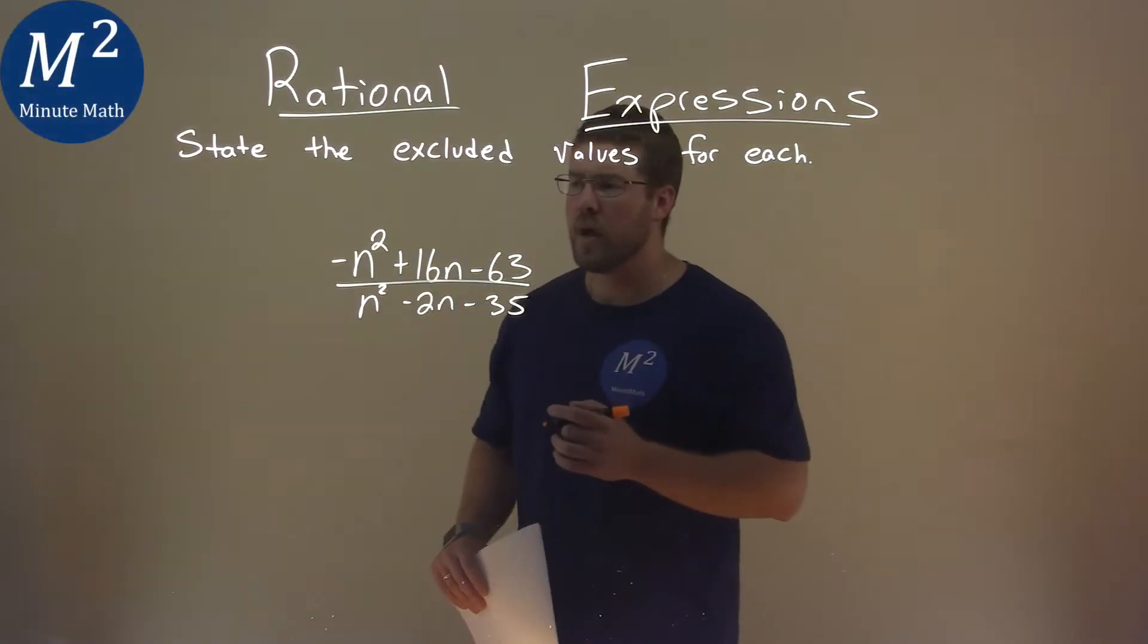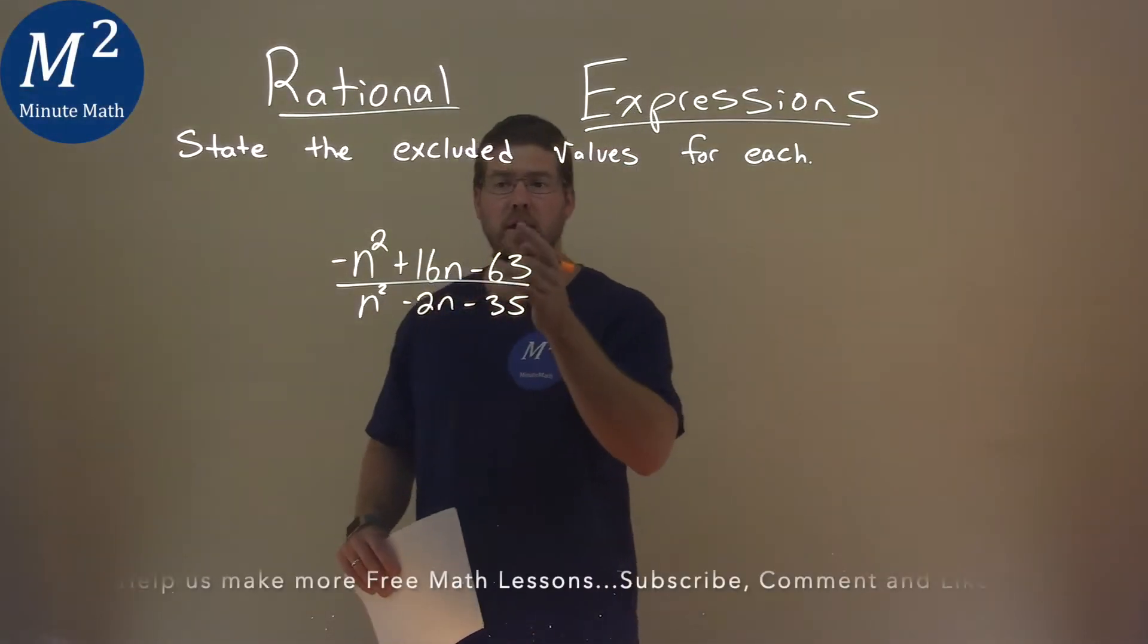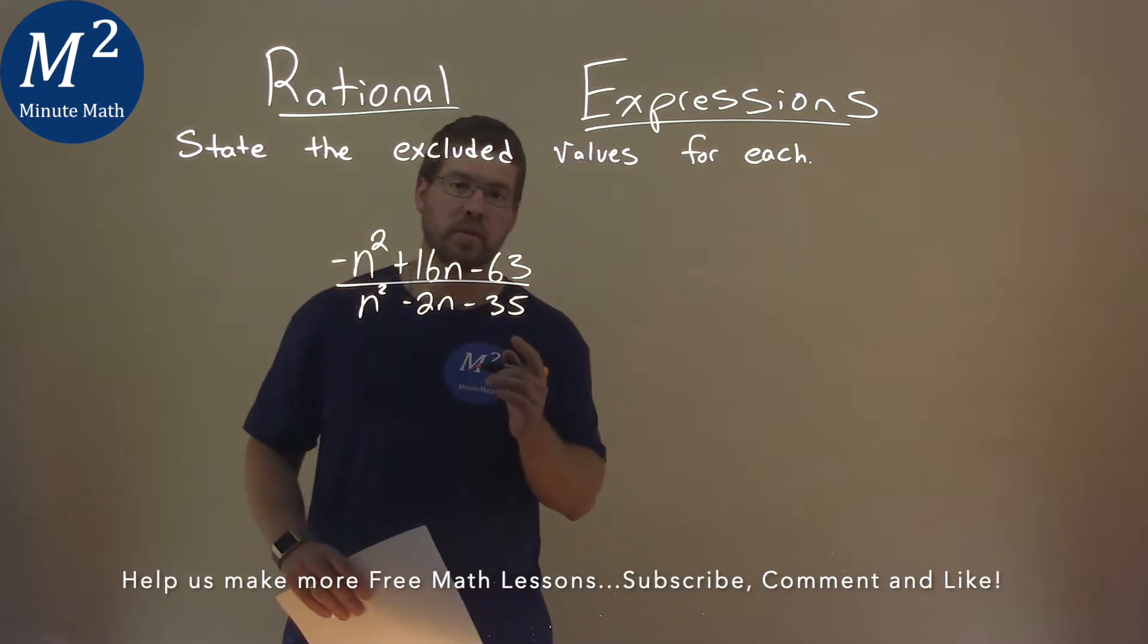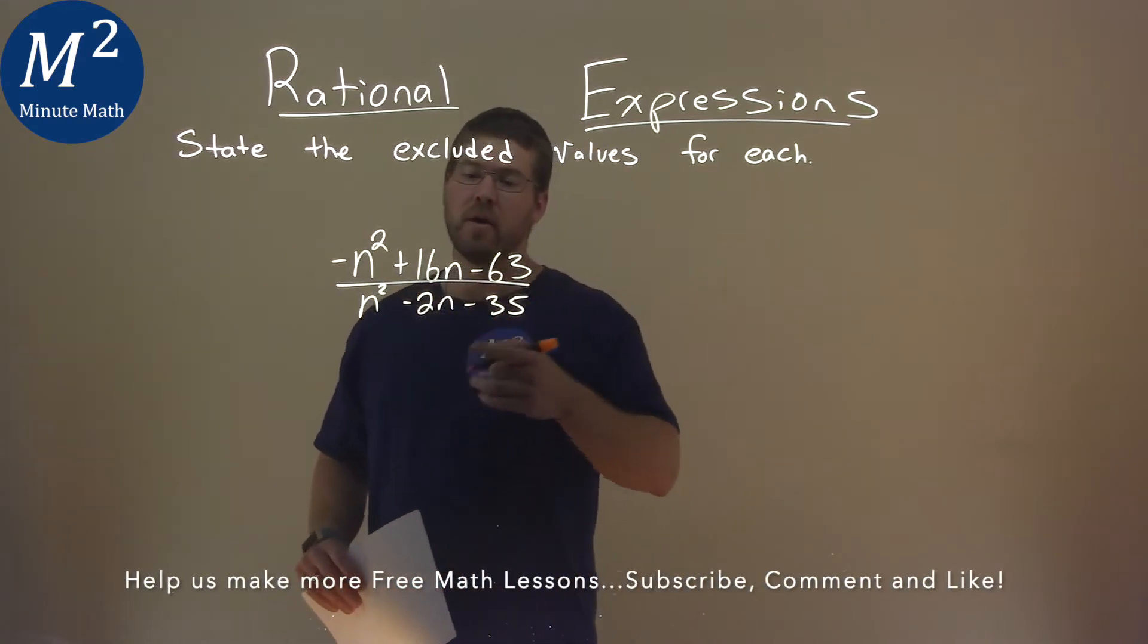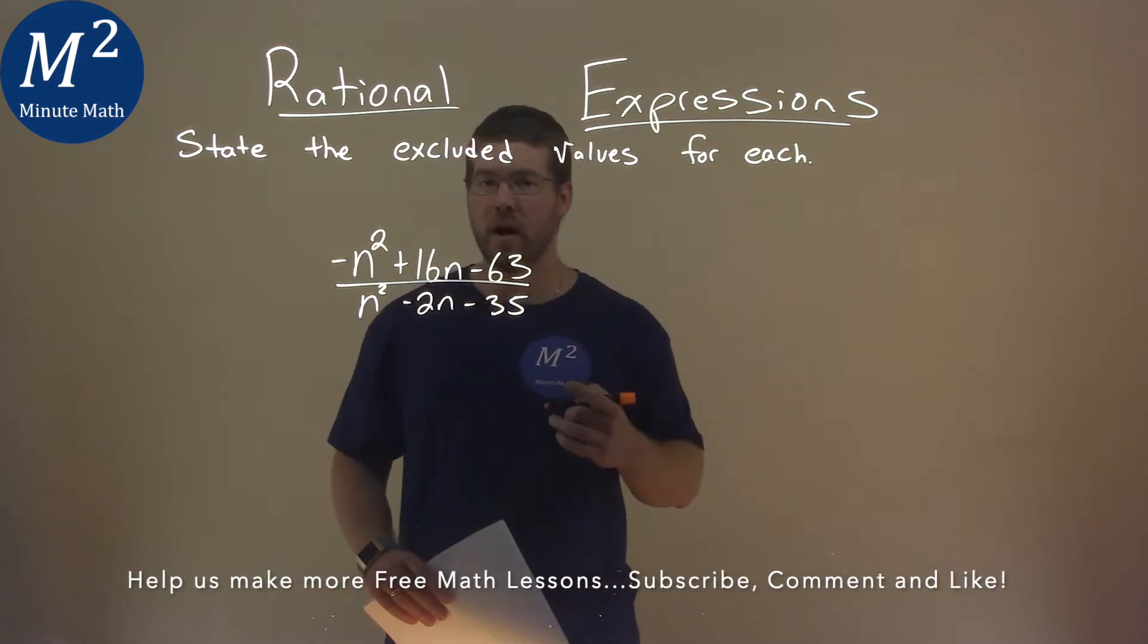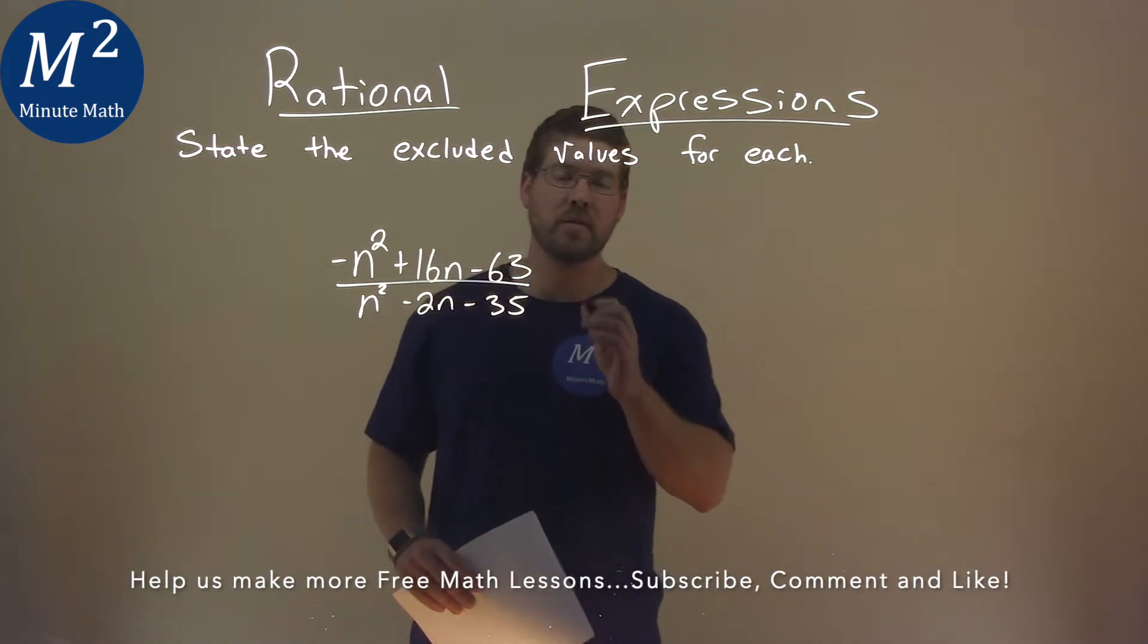We're given this problem right here: negative n squared plus 16n minus 63, all over n squared minus 2n minus 35, and we need to state the excluded values here.